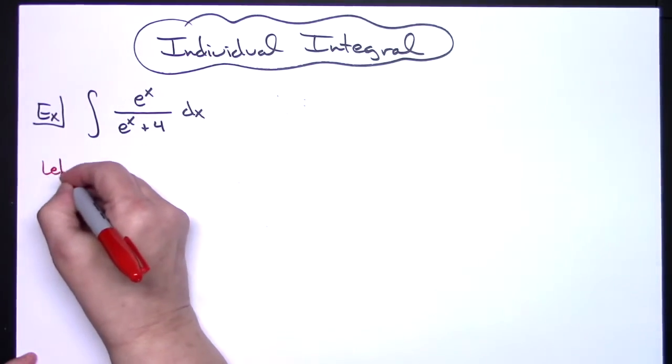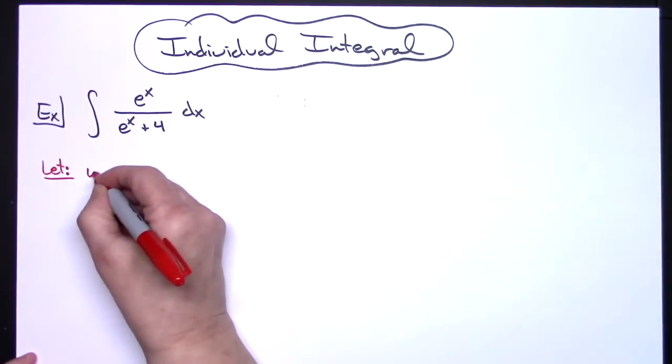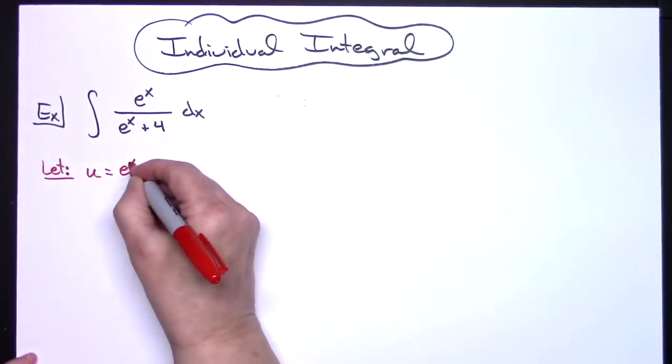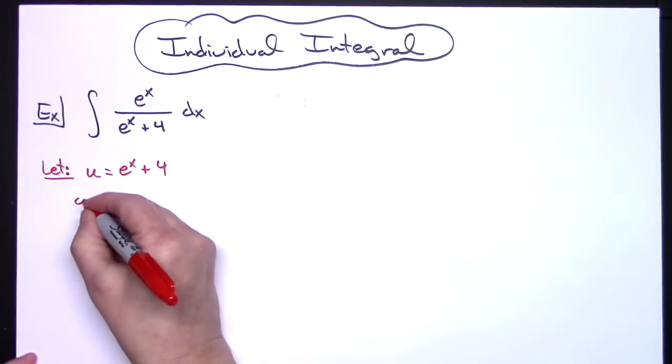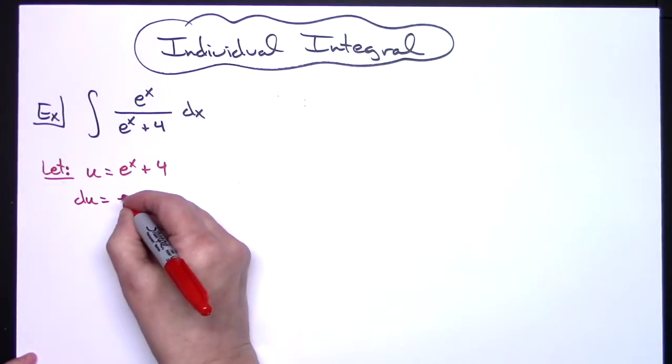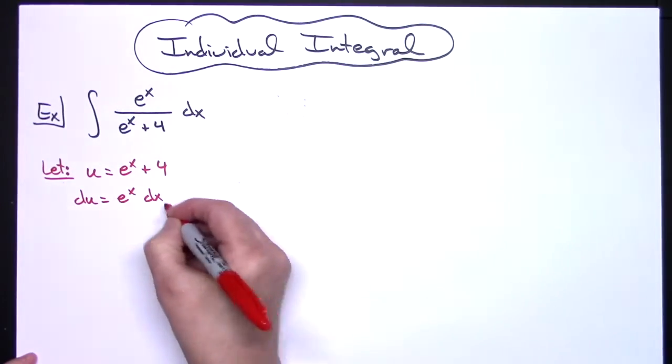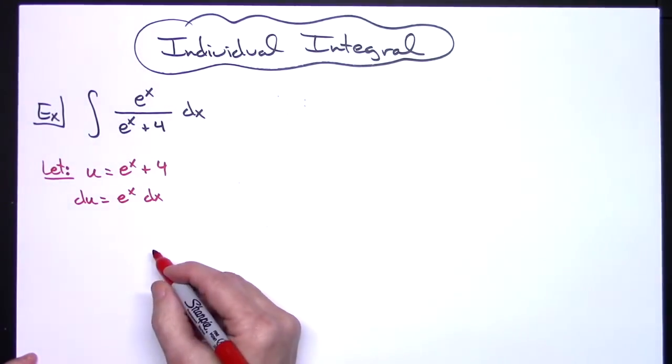So we're going to let our u be equal to that e to the x plus 4. When I take the derivative there, I'll have a du is equal to an e to the x dx, and then I'm going to go ahead and solve all the way down for dx.